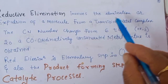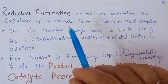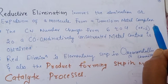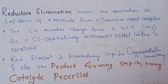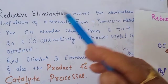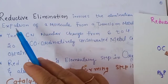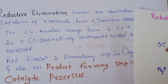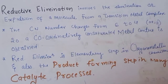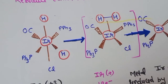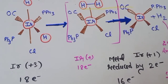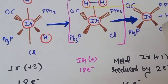Reductive elimination involves the elimination or expulsion of a molecule from a transition metal complex. Let us look at a specific example — we will use the same complex we discussed in the oxidative addition reaction.